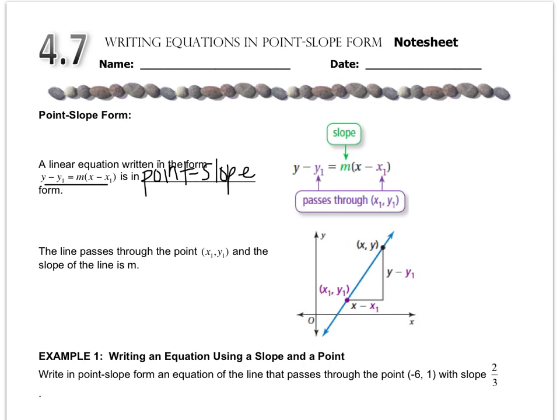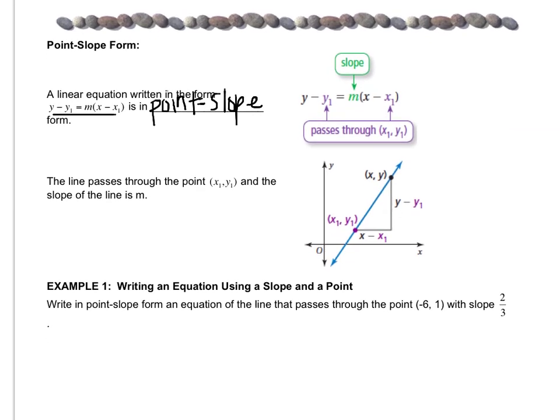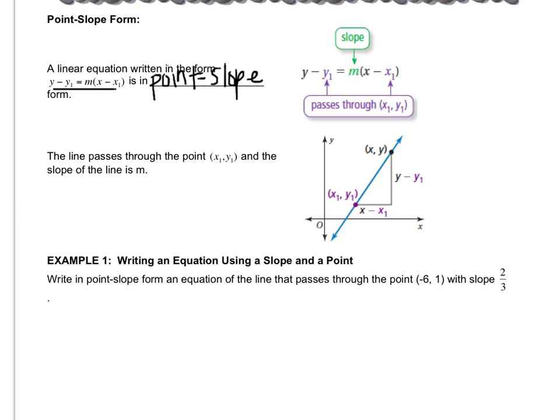The reason it's called point-slope form is that if you look here, you see x₁, y₁, those come from the point, the coordinate point over here, and then m is the slope. So in point-slope form, you can tell what one of the points is on the line and the slope. The line passes through (x₁, y₁), and there's the slope. So there's a picture demonstrating what I was talking about.